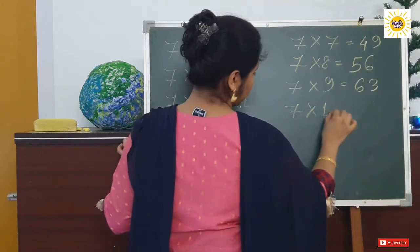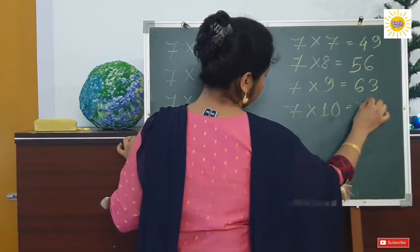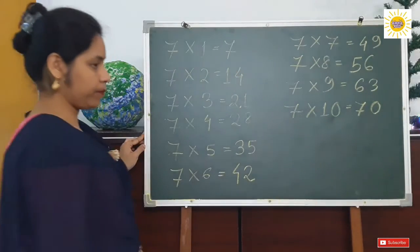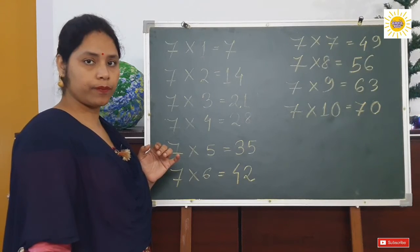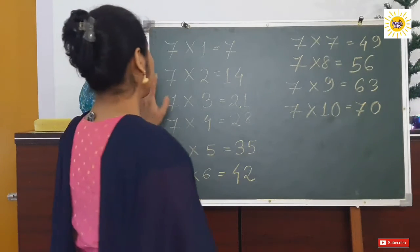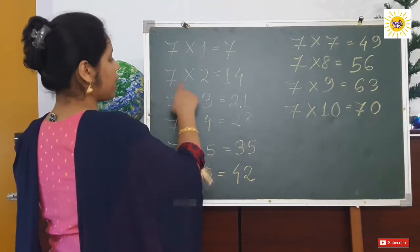So do you know how to learn it? Let's start. 7 ones are 7. 7 twos are 14. 7 threes are 21. 7 fours are 28. 7 fives are 35.